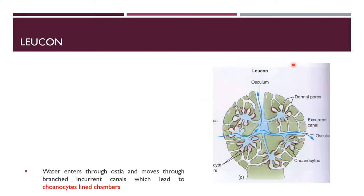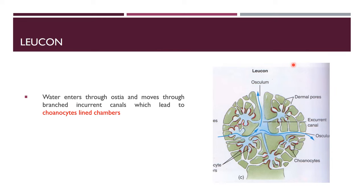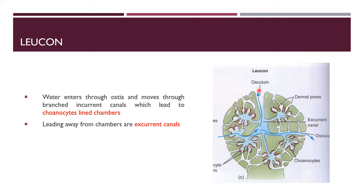The third body form is leucon. Water enters through ostia and moves through branched incurrent canals leading to choanocyte-lined chambers. From the chambers, excurrent canals lead to multiple oscula. In leucon, the spongocoel is absent and there are many exit points called oscula.